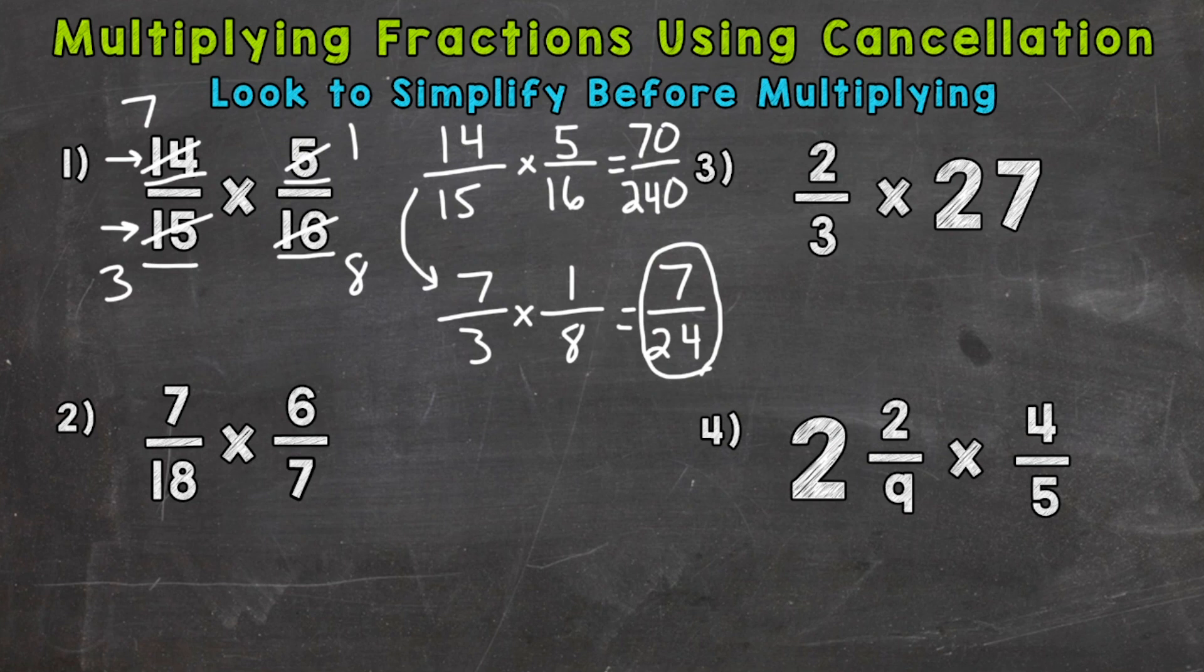And also 70 over 240. That's going to take a lot more simplifying and work there. So you can see that the cancellation made everything simpler. Now 70 over 240 is equivalent to what we got with the cancellation. We would just need to simplify that and break that down. And it would eventually get to 7 24ths. On to number 2 where we have 7 18ths times 6 7ths. So we need to look at numerators and denominators. Top and bottom. And we can see that we have a 7 and a 7 here. So a common factor of 7 between those 7s. So divide each by 7. And we get 1. 7 divided by 7 is 1.